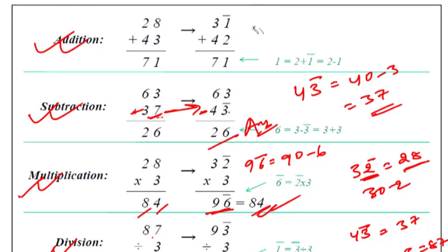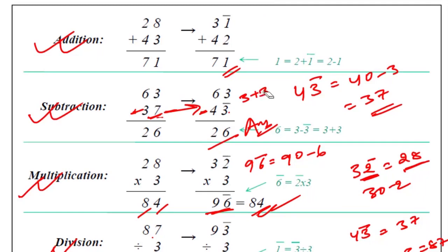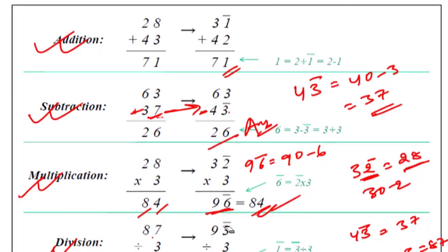In addition we are subtracting — 2 minus 1. In subtraction we are adding. Now we have to add — in subtraction we add. 31 means 1 is bar, 1 is having a bar. Because 3 is having a bar, this is 20. Clear?